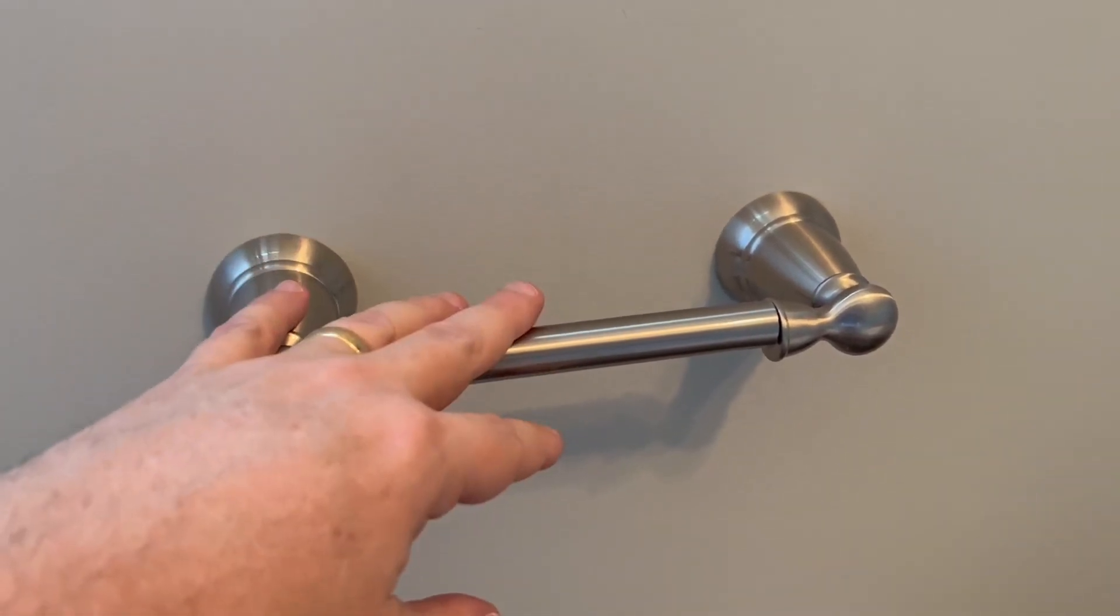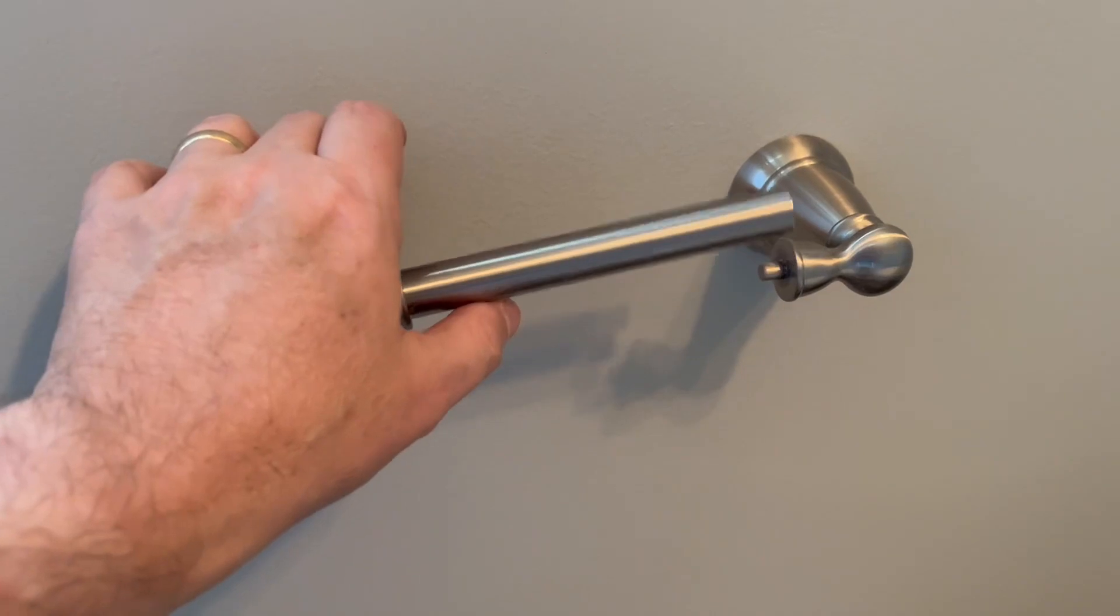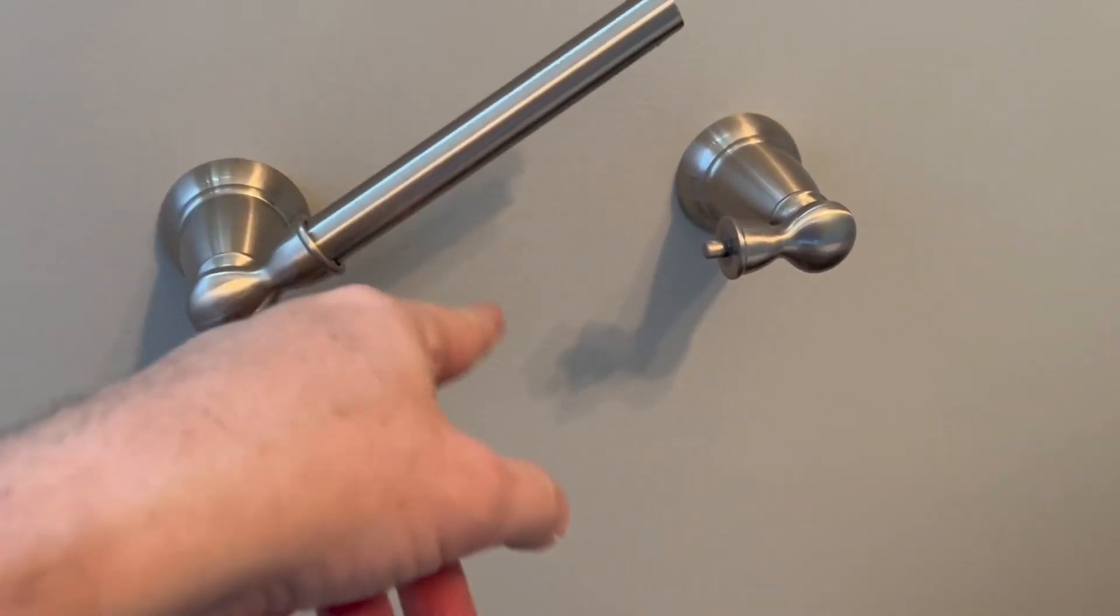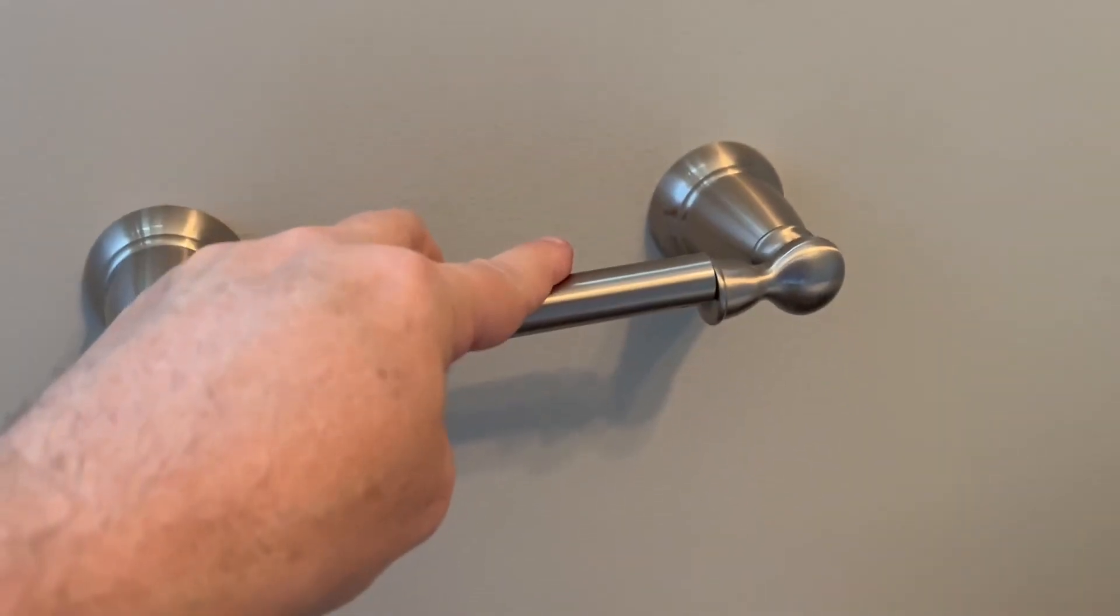And with this toilet paper holder, what I really love is it's so easy to just replace the toilet paper. You just lift up with one finger, put on your toilet paper roll, and then you just lower it. So super easy to do.